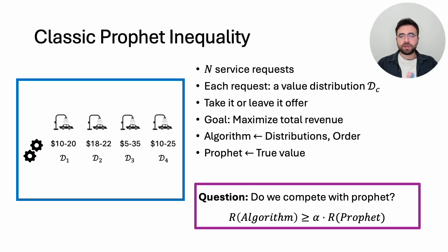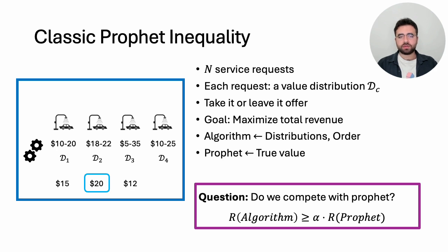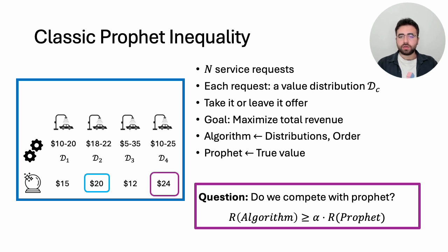An algorithm takes the prior information and order as input and encounters customers' true valuations during the day. Say 15 first — it skips — then 20 for the second; the algorithm accepts it, generating 20 dollars of revenue. For the rest there is no way to accept any offer, though we later learn the valuations 12 and 24. A prophet who knows the future would select the best offer of 24 dollars. The main question of prophet inequality is whether we can design an algorithm which competes with the prophet.